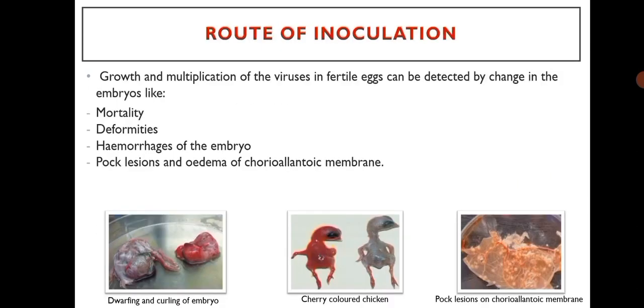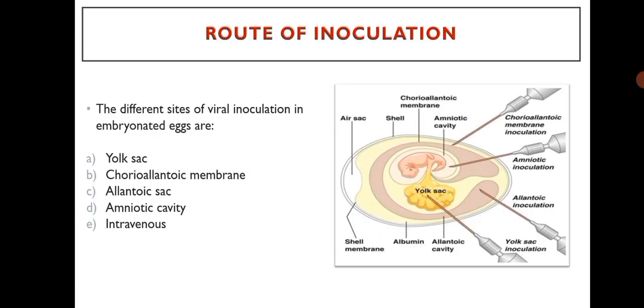Growth and multiplication of viruses in fertile egg can be detected by changes in embryos like mortality, deformities, hemorrhages of the embryo, pock lesions and edema of chorioallantoic membranes. The different sites of virus inoculation in embryonated eggs are: yolk sac, chorioallantoic membrane, allantoic sac, amniotic cavity, and intravenous route.